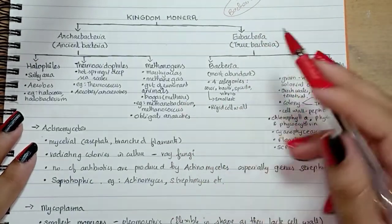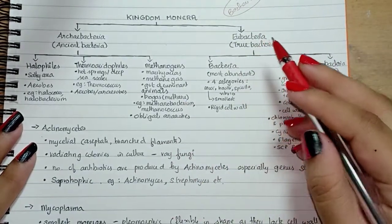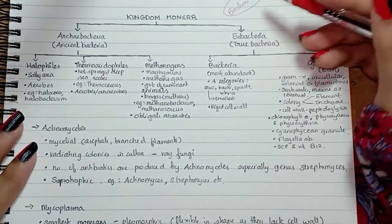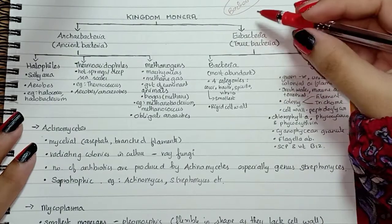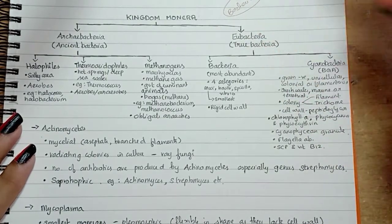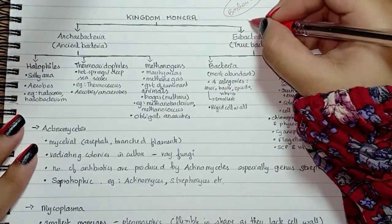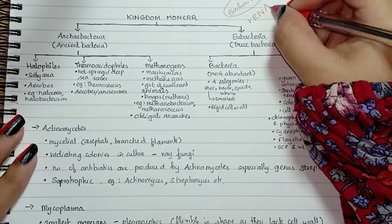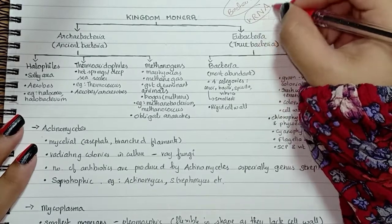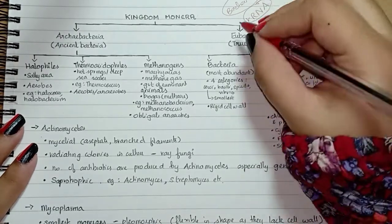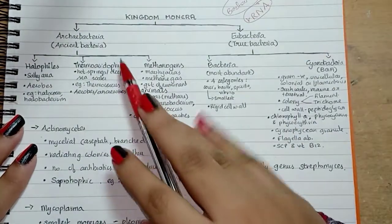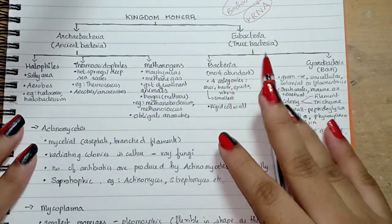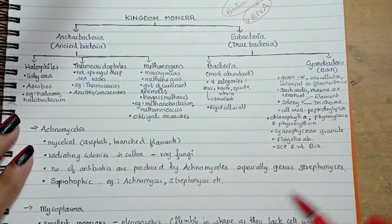On the basis of rRNA genes, Monera have two major groups. Bacteria are of two groups: archaebacteria and eubacteria.